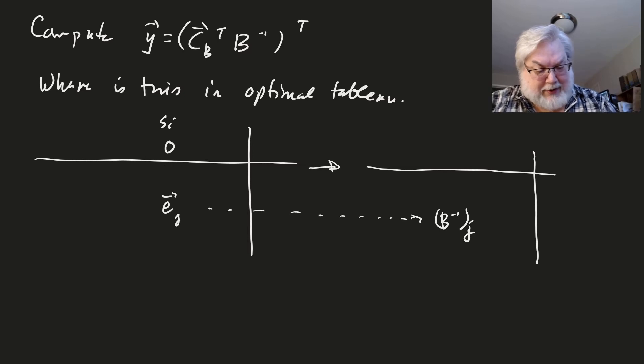And then the entry underneath the SI is going to be CB transpose B inverse, the J-th column of B inverse. And so this is YJ, the J-th solution to the dual. Okay?